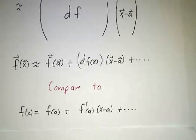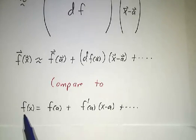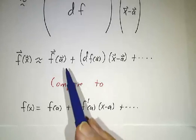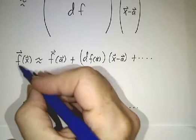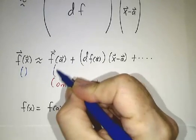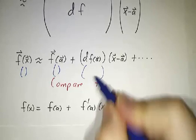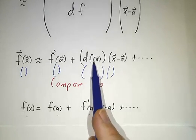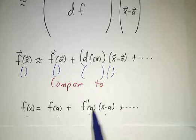So if you compare what we had for ordinary functions of one variable, we had f + f' times (x-a). This behaves the same way, except this is a vector, is equal to a vector plus a matrix times a vector. This was just a number is a number plus a number times a number. If you think of the derivative as being a matrix, then it's really the same formula.